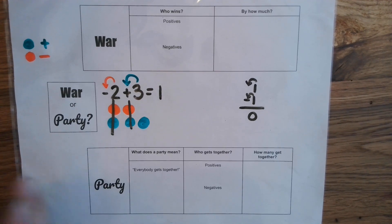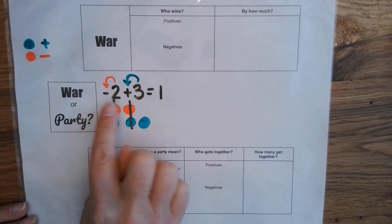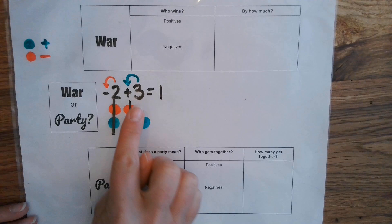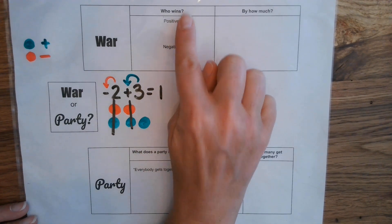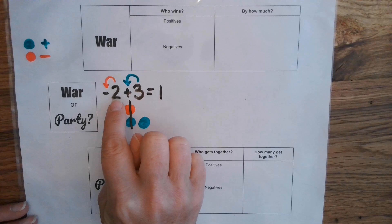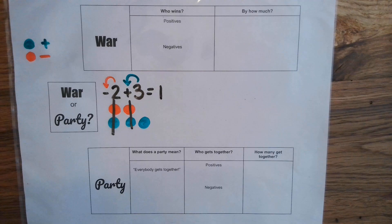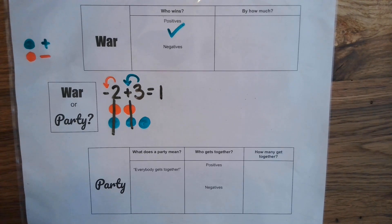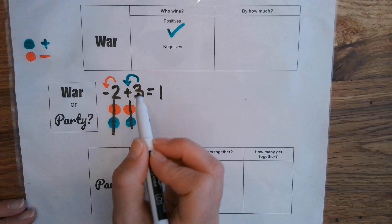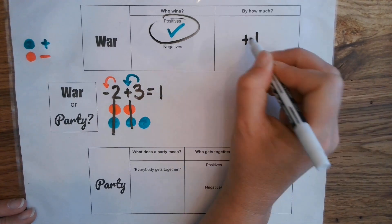If we didn't want to draw pictures every time, we look at this: negative and positive are opposite sides so they're going to be fighting — this is a war. Who wins? Whoever has the most soldiers. The positives have three and the negatives have two, so the positives win. By how many? The difference of three and two is one, and since the positives win, our answer is positive one.